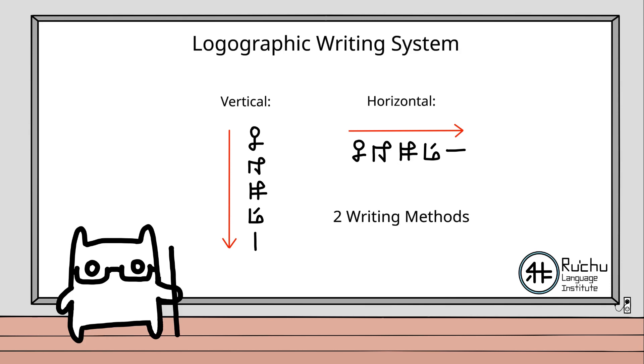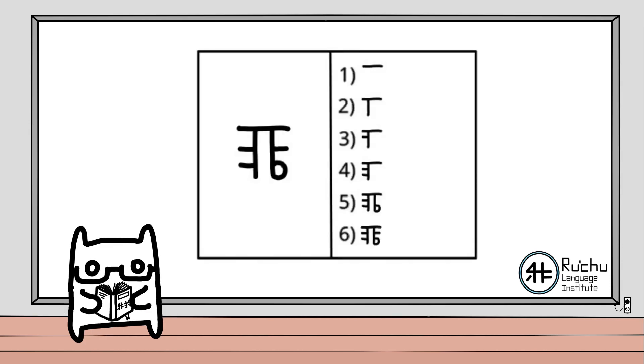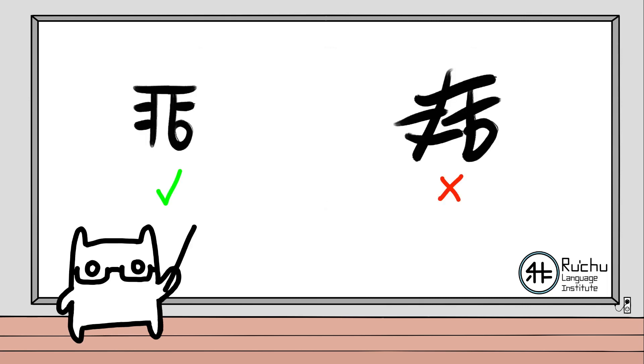Ruchu can be written horizontally, from left to right, or vertically, from top to bottom. There is a correct way to write out each separate character, but that is merely to produce proper penmanship.